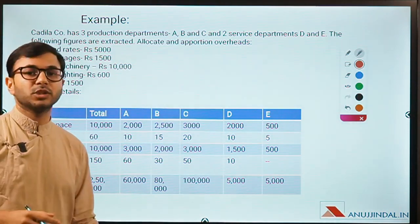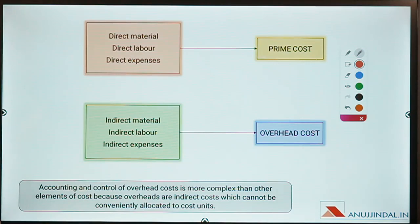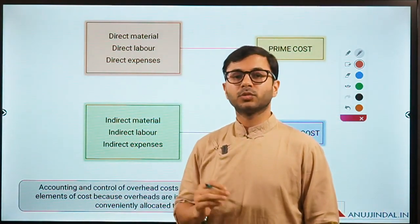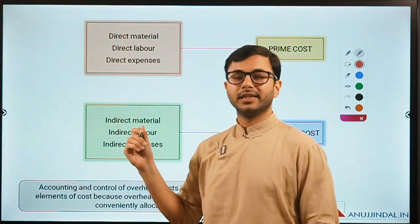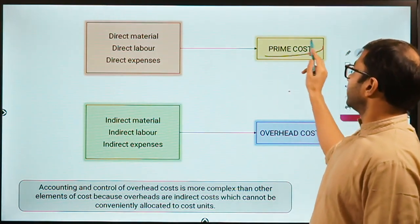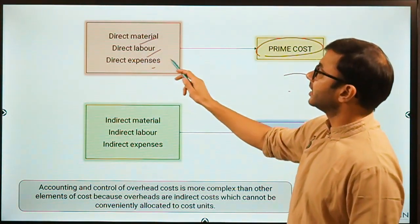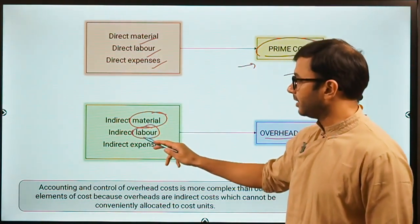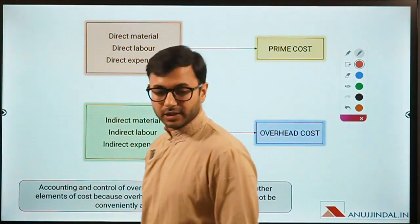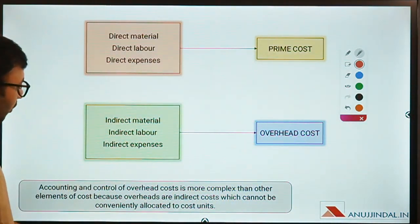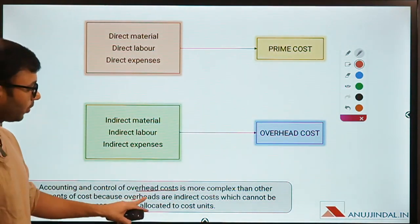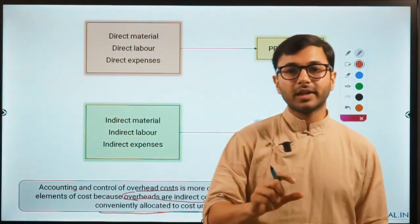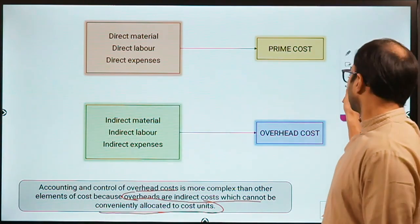That is what overheads does — it allocates all these indirect expenses such as indirect wages, indirect labor, etc., to different departments so that the cost and benefit of each department is available to us. This is especially useful for big enterprises with different departments. Now, through this example I'm very sure 90% of overheads is done. Prime cost covers all direct expenses — direct material, labor, and expenses. Then overhead costs cover all indirect labor, material, and expenses.